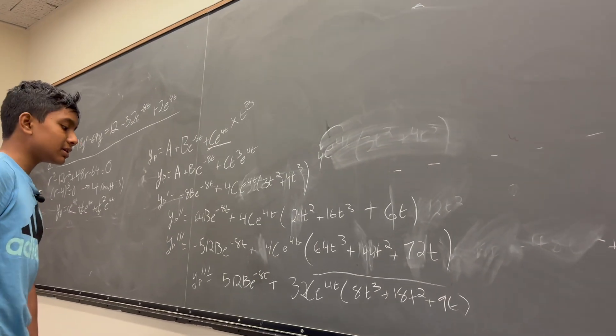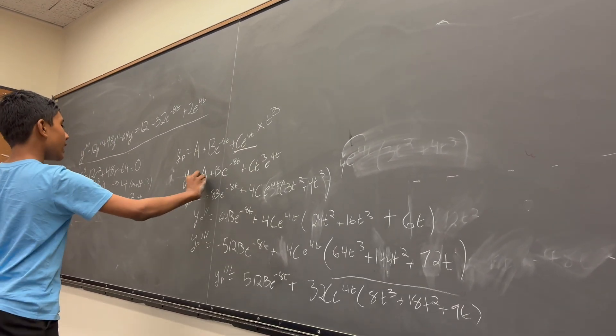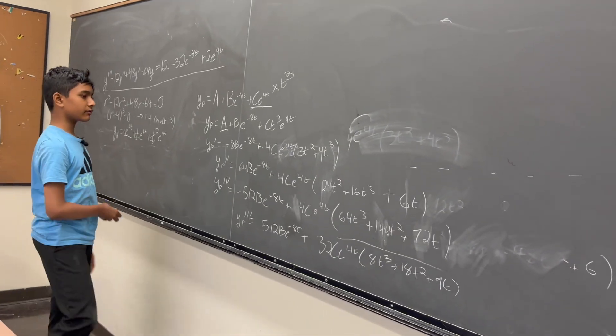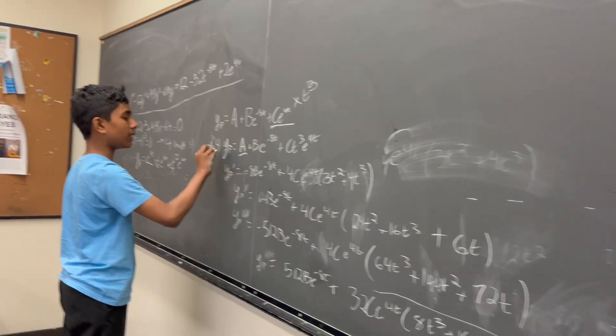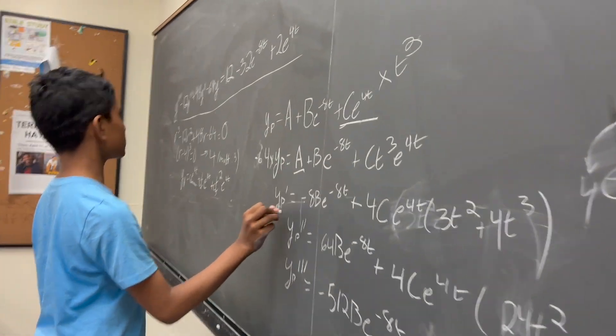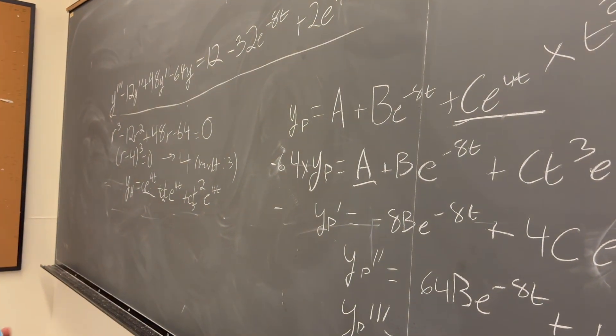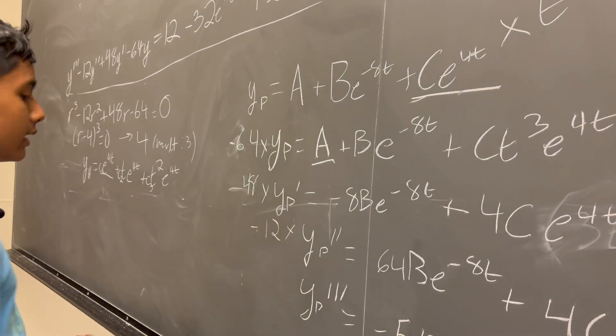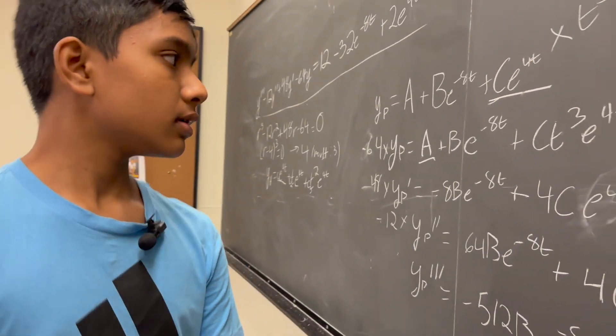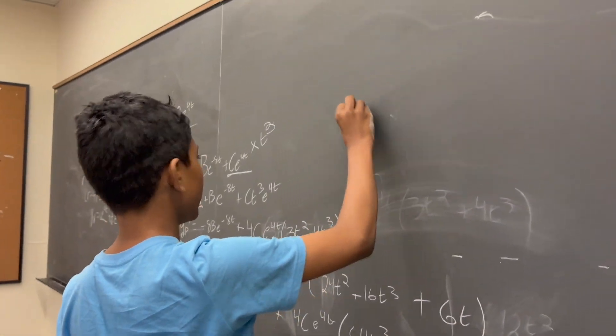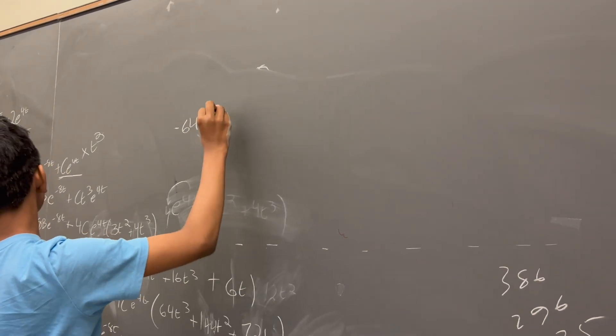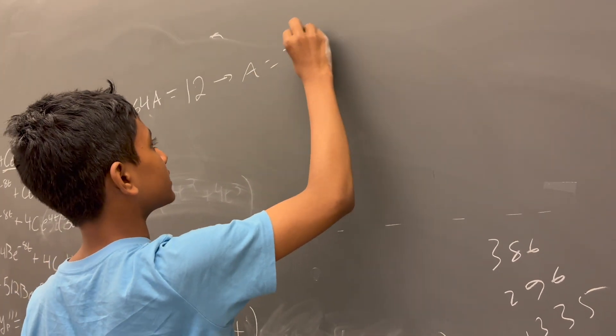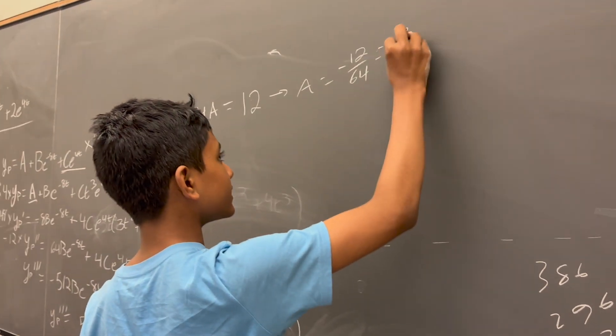All right, cool. So now, let's add up the constants. Obviously, since A only appears in one of these equations... Well, first of all, we actually have to multiply everything out. So, this is going to be multiplied by minus 64. This one is going to be multiplied by positive 48. This one is going to be multiplied by minus 12. This one is just regular. And so, we get minus 64A has to be equal to 12, obviously. So that means A is equal to minus 12 over 64 or minus 3 over 16. Pretty easy.